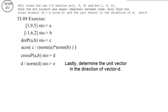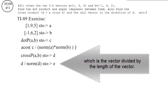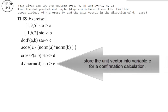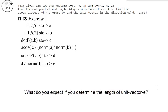Lastly, determine the unit vector in the direction of vector D, which is the vector divided by the length of the vector. Store the unit vector into variable E for a confirmation calculation. What do you expect if you determine the length of unit vector E, i.e. norm E?